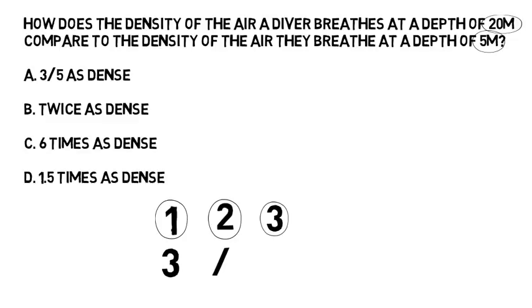It's at 20 meters compared to a depth of five meters. What's the pressure at five meters? It's 1.5 atmospheres. What is three divided by 1.5? Does that give us a whole number? If it does, that will be the answer. Well, three divided by 1.5 is indeed a whole number. It's two.